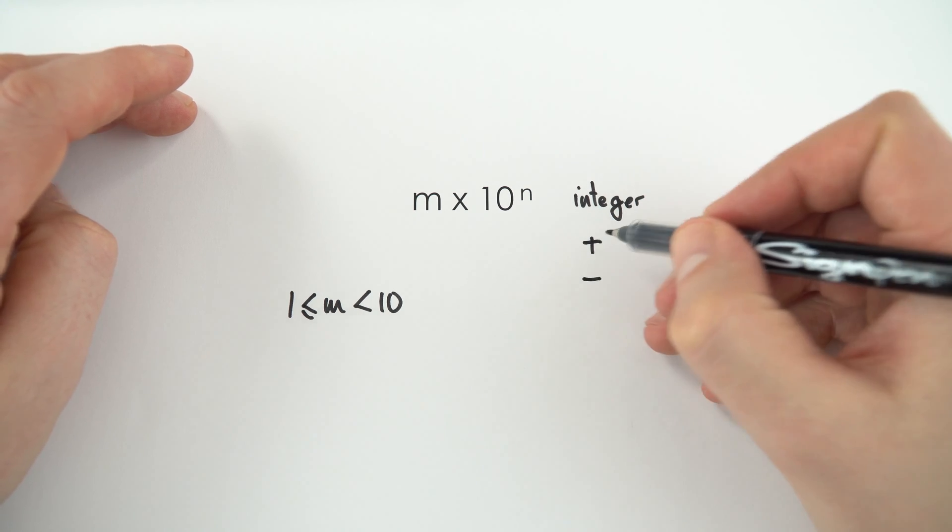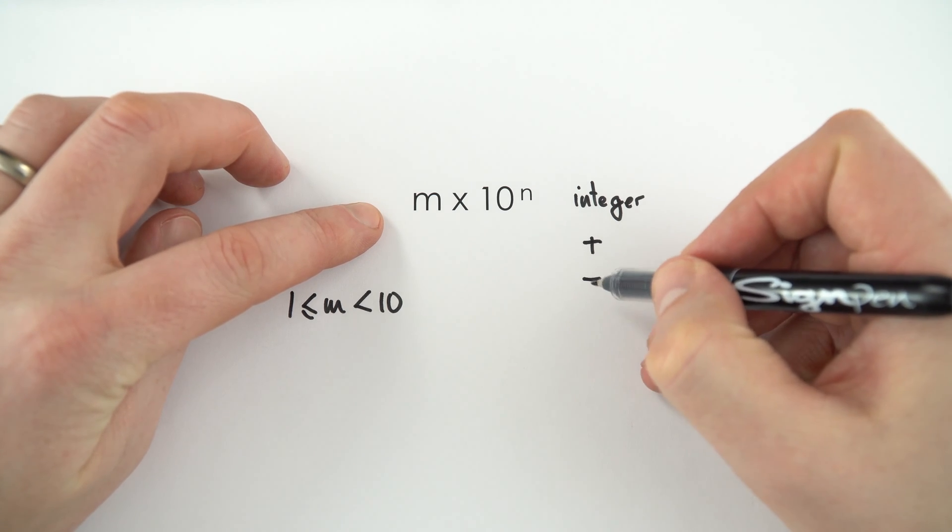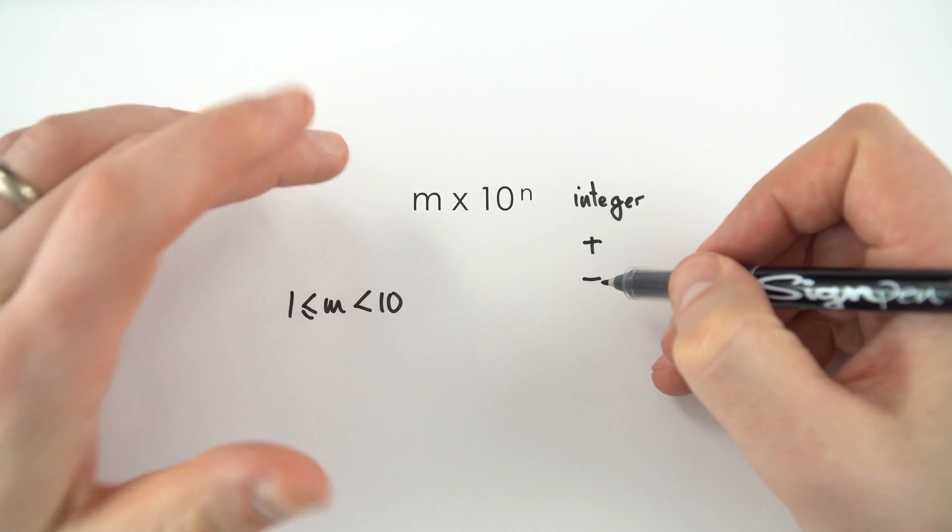Now the more positive the number, the bigger the thing that it's talking about, the more negative this number, the smaller the number that's displayed.